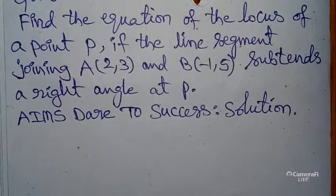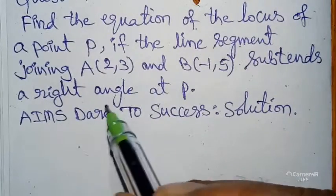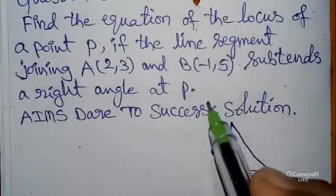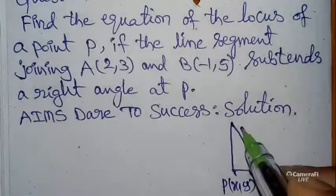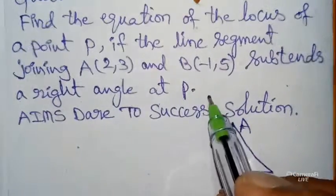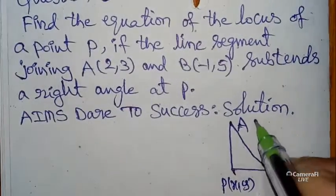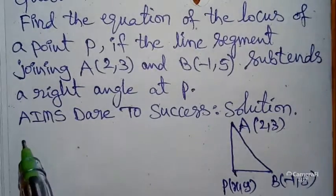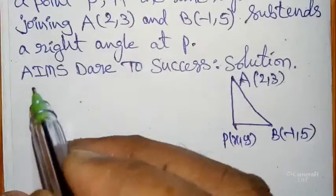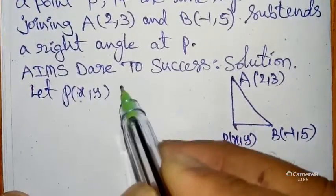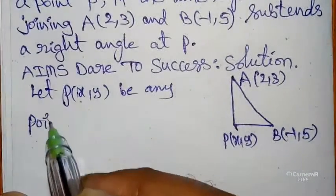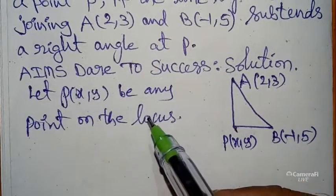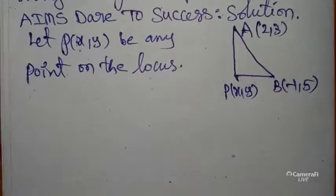Now I will start the question: find the equation of the locus of a point P if the line segment joining two points subtends a right angle. Right angle means draw a right angle triangle at P. So P is (x, y), and the ends of the hypotenuse are A(2, 3) and B(−1, 5). Let P(x, y) be any point on the locus — we assume this in every locus problem.